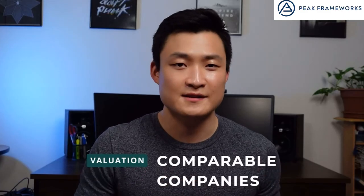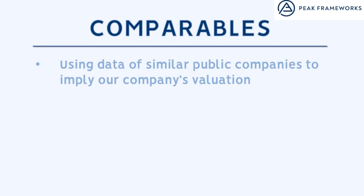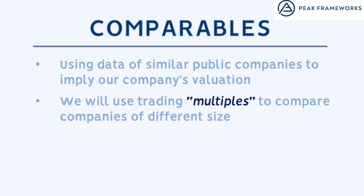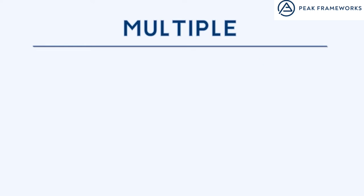Comps is the practice of comparing a company to its peers and implying what it's worth based off of its relative trading metrics. When we're doing a comparable companies analysis, we're essentially looking for other publicly traded companies that have similar characteristics to ours so we can see potentially what ours will be worth. This is what's known as relative valuation because we are determining the value of a company relative to its peers. We are going to explain what a multiple is and actually do comps by using online trading data and Excel.